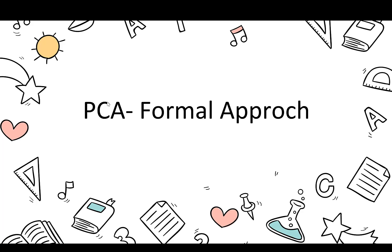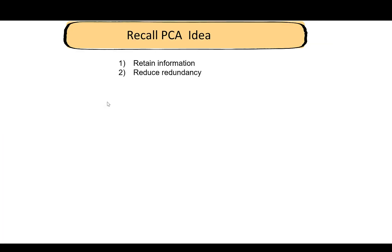Welcome back. In this video we'll take another approach to PCA — a more formal approach, stated as a theorem. If you remember from the previous video, PCA is a transformation with two goals: one, to retain information in the transformed data, and two, to reduce redundancy. Information is captured by the variance of the data, and redundancy is captured by the covariance.